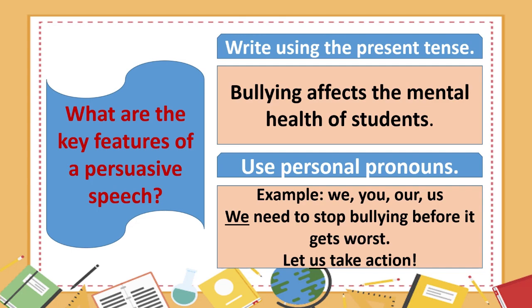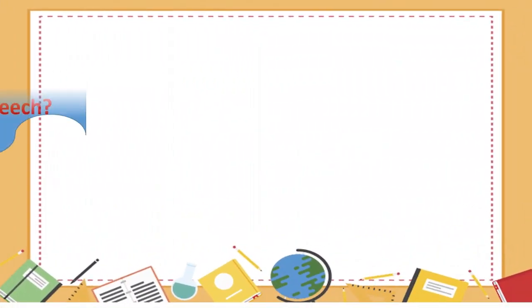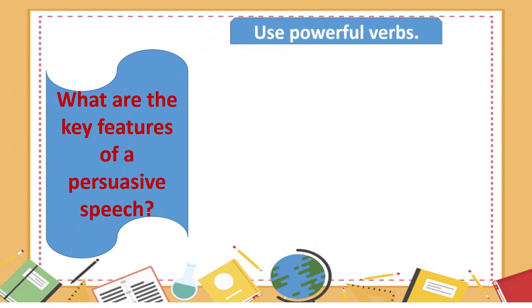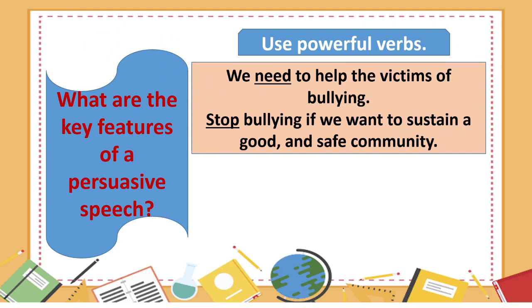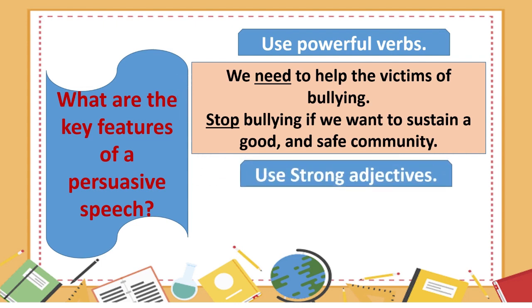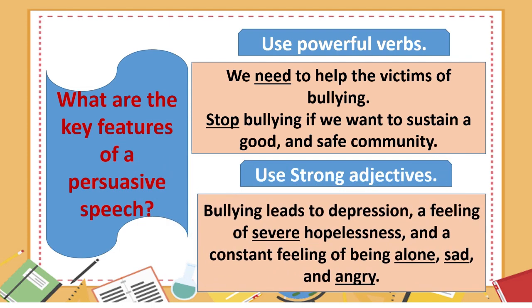Let us take action. Number 3: Use powerful verbs. For example, we need to help the victims of bullying. Stop bullying if we want to sustain a good and safe community. Number 4: Use strong adjectives. For example, bullying leads to depression, a feeling of severe hopelessness, and a constant feeling of being alone, sad, and angry.